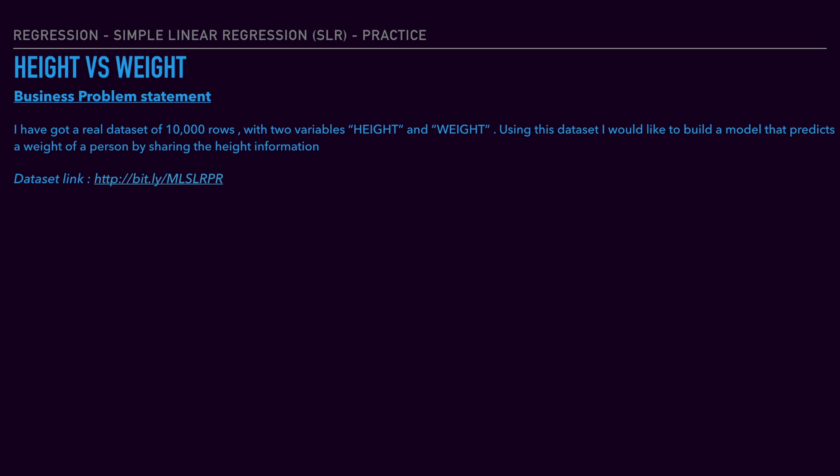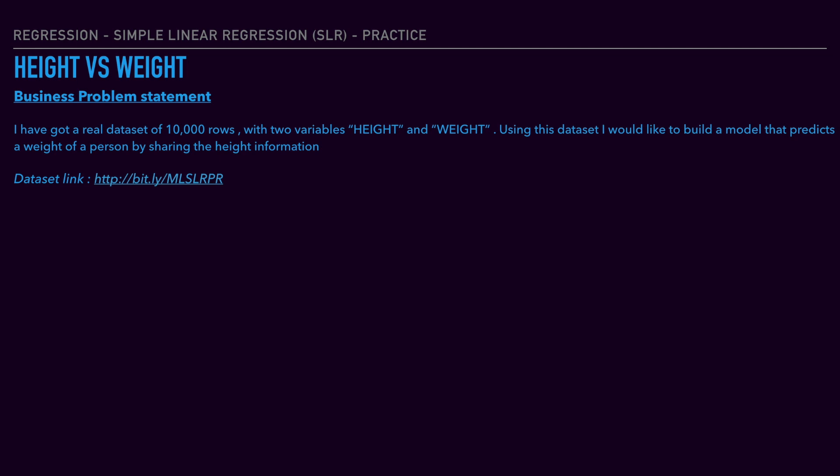We will have a height and weight data set. This is a business problem statement. As a business user, they have got a data set with 10,000 rows. There are two variables. One is height and the other one is weight. In the data set, we need to build a model that is able to predict the weight of a person by just giving the height information.